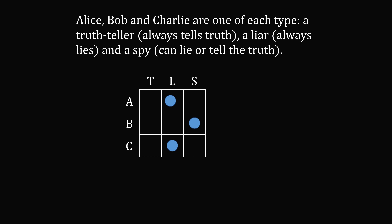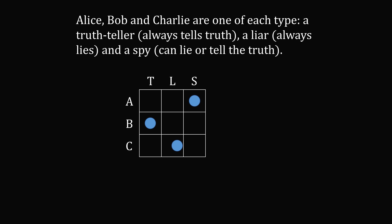Now suppose instead that Alice was a liar. Then we would need either Bob to be a spy and Charlie to be a truth teller, or vice versa. Finally, if Alice were a spy, then there are only two possibilities to consider: Bob could be a truth teller and Charlie could be a liar, or vice versa. So in total, there are six possibilities to consider.